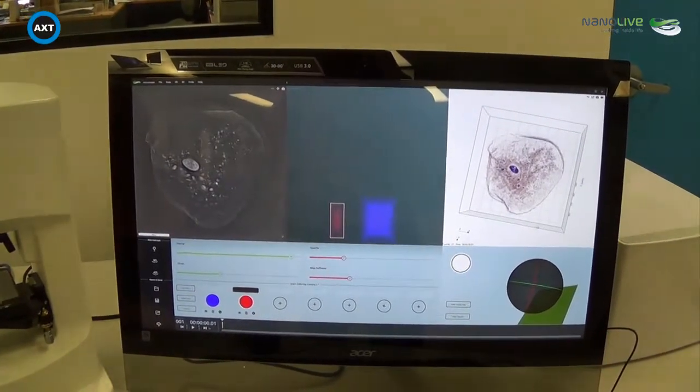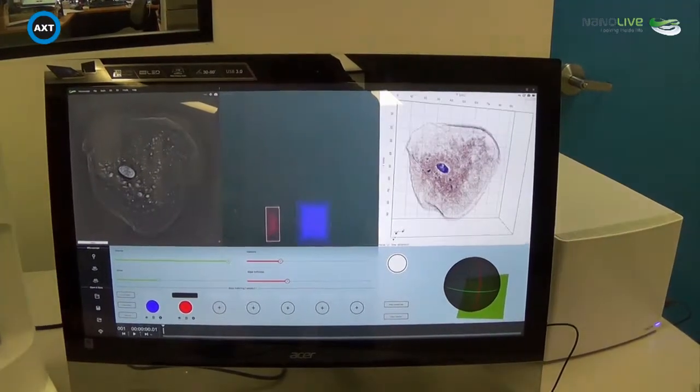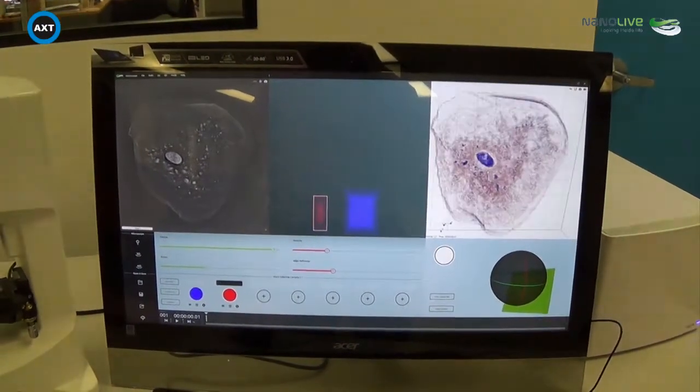And you can do something similar with the 3D image? Yeah, and the 3D image is exactly the same. So find a spot and then just zoom in by scrolling with your scroll bar on your mouse.